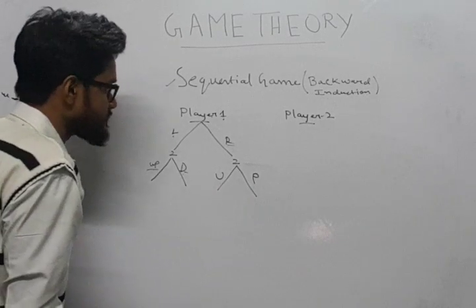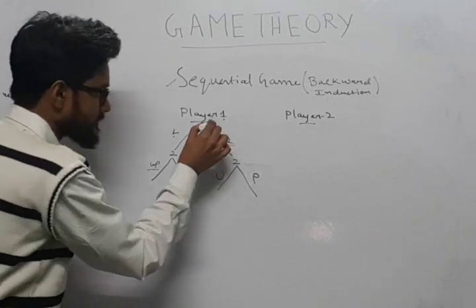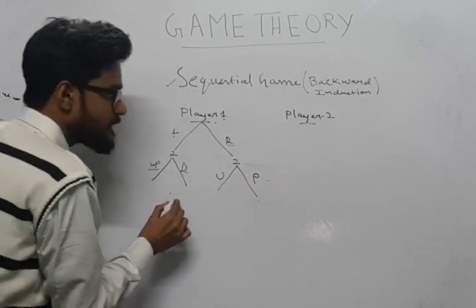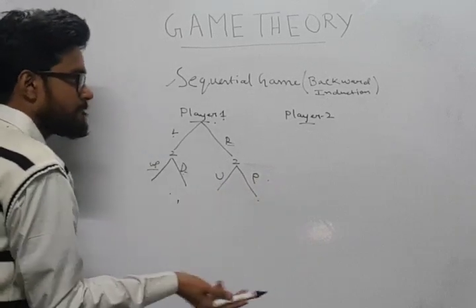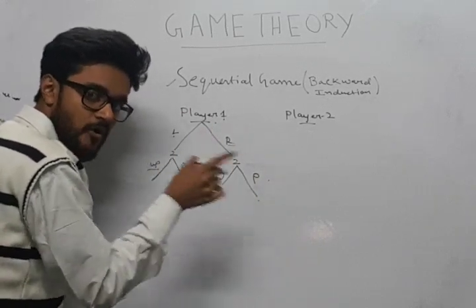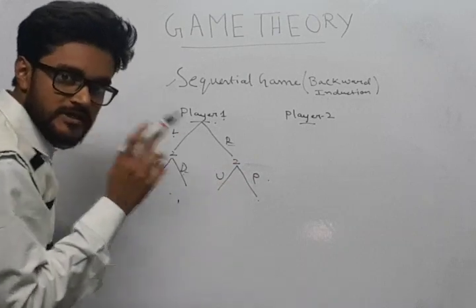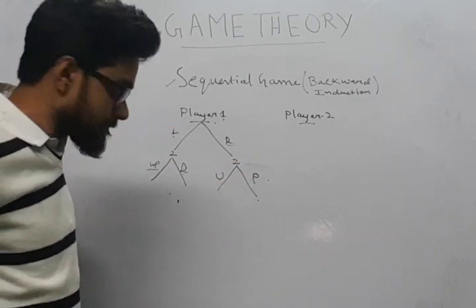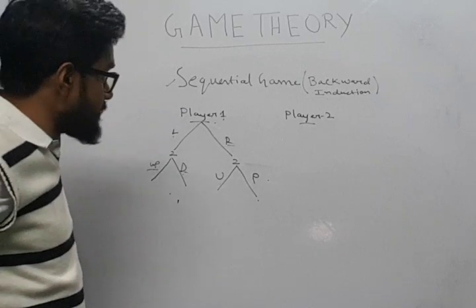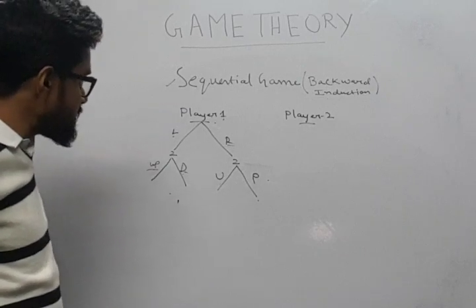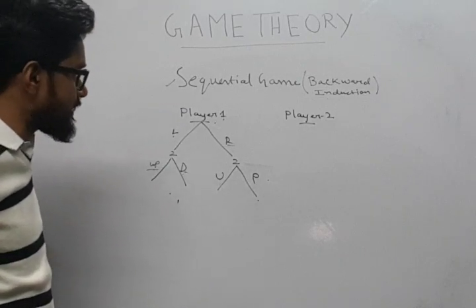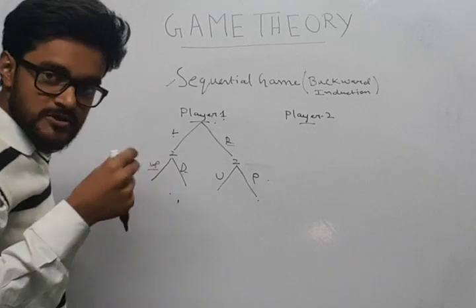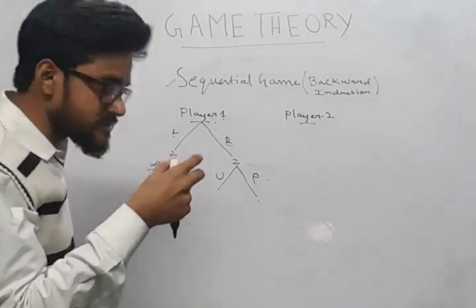As you can see, player 1 can observe what player 2 will play beforehand and play accordingly. This was not the case in a simultaneous game. Here in a sequential game, player 1 can make the best possible choice given player 2's choice.